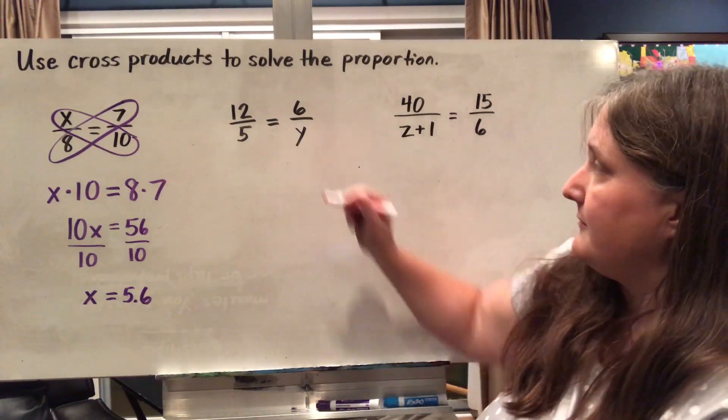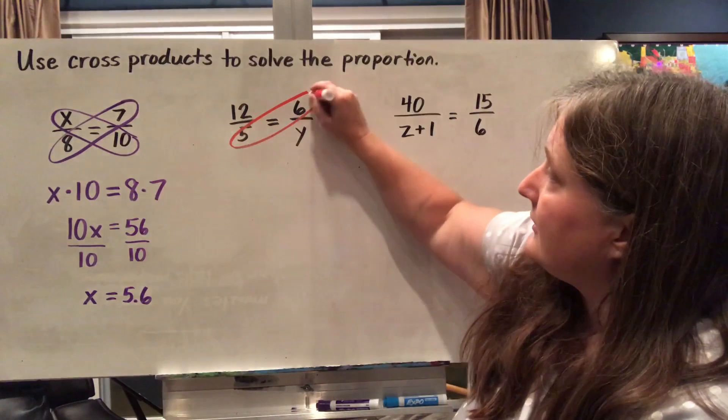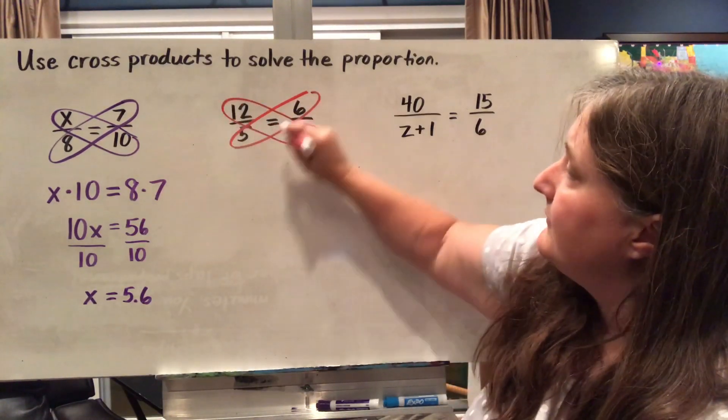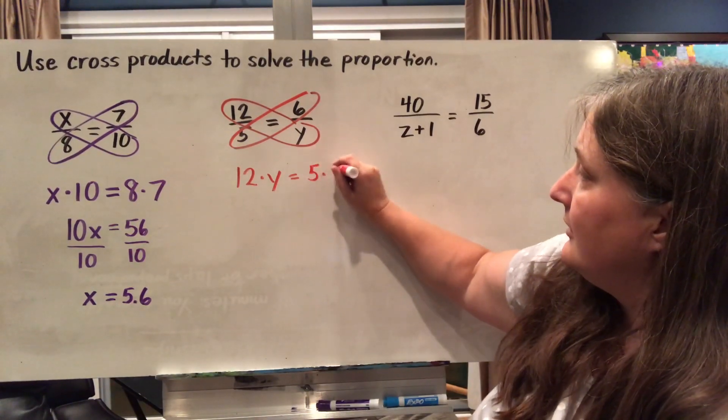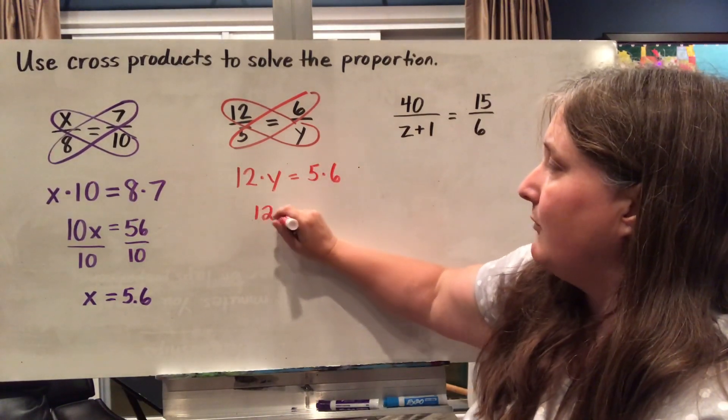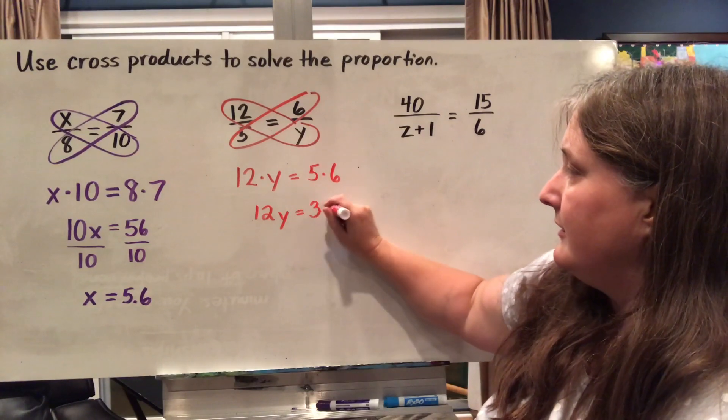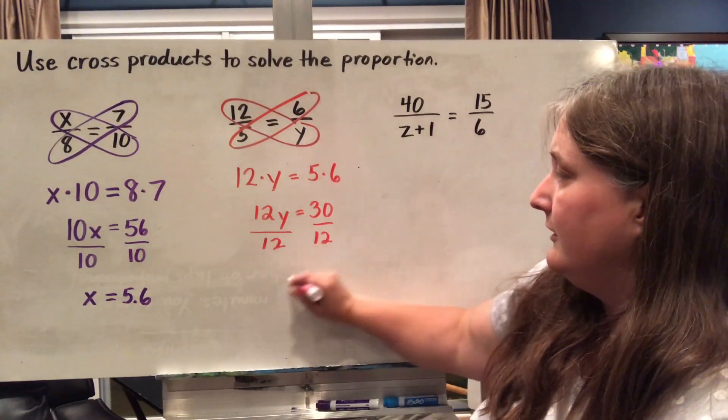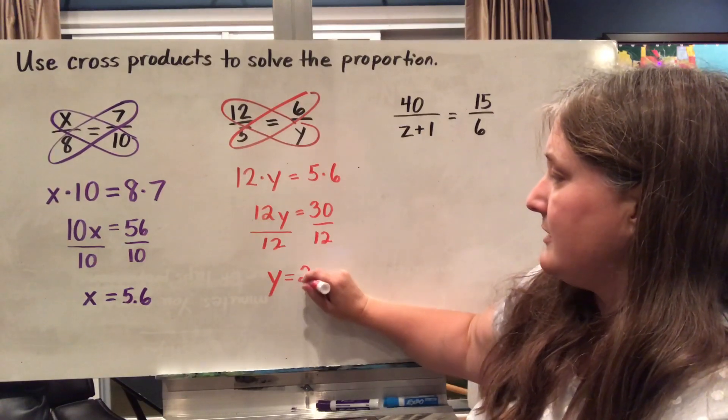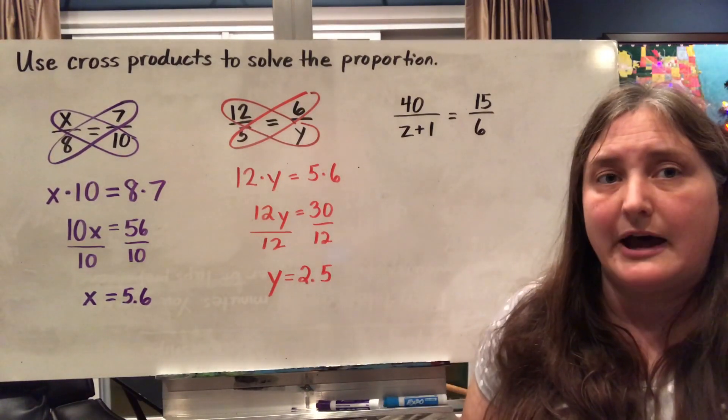So let's try that here. So I have two cross products. I have 12 times y and I've got 5 times 6, which I can simplify to 12y equals 30. So to solve for y, I'm going to divide both sides by 12, and y equals 2 and a half or 2.5.